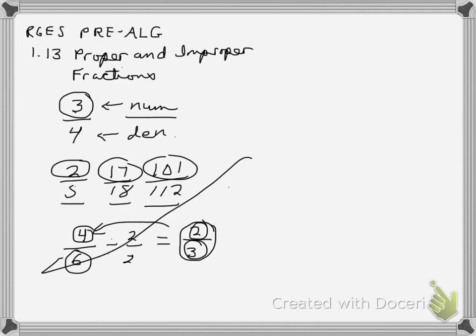An improper fraction would be the other way. So an improper fraction would mean the numerator is greater than the denominator. For instance, 5 fourths.